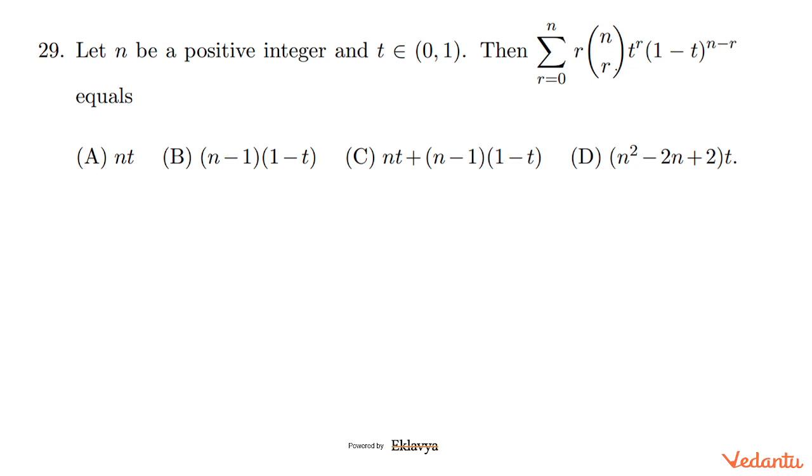R NCR, this is the symbol for NCR. T raised power R, 1 minus T. This sigma we can write like R into NCR, which we can write as N by R times N minus 1 C R minus 1. Very simple formula.